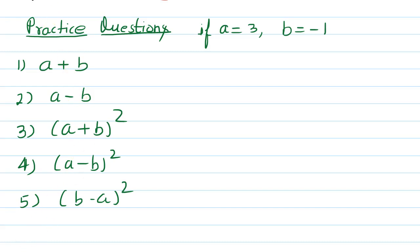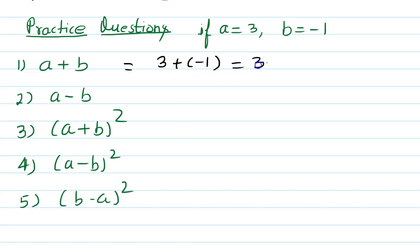Let's check your answers. a is 3 and b is minus 1. For a plus b: plus and minus gives minus, so 3 minus 1 equals 2. For a minus b: a is 3, then minus sign, and b is minus 1.